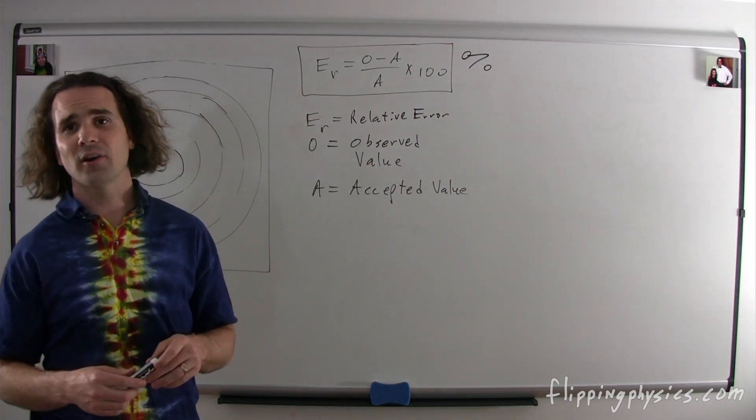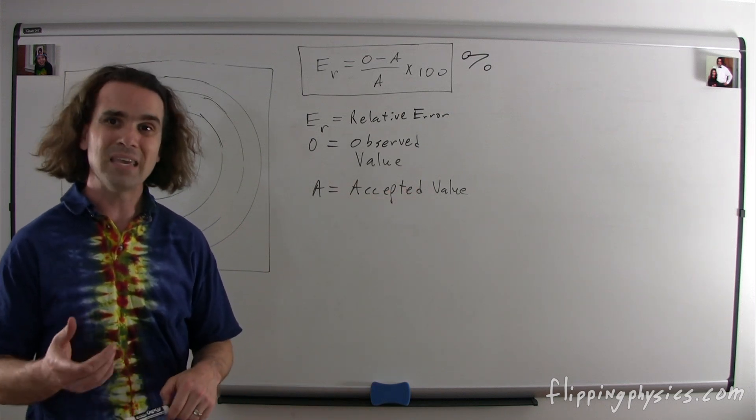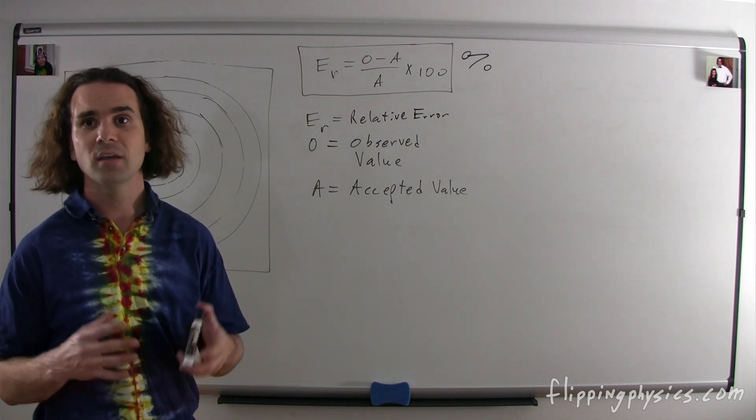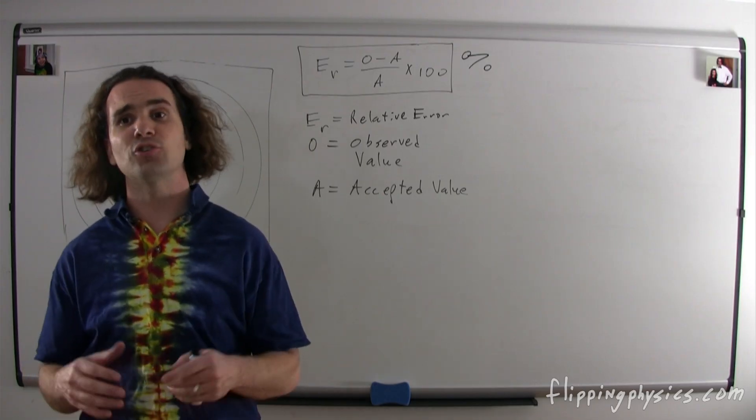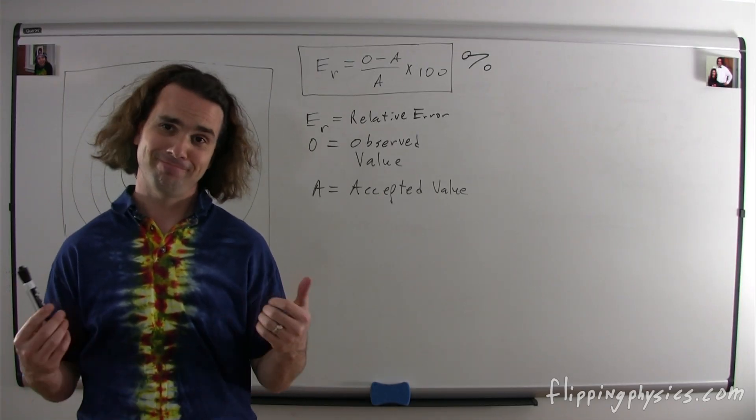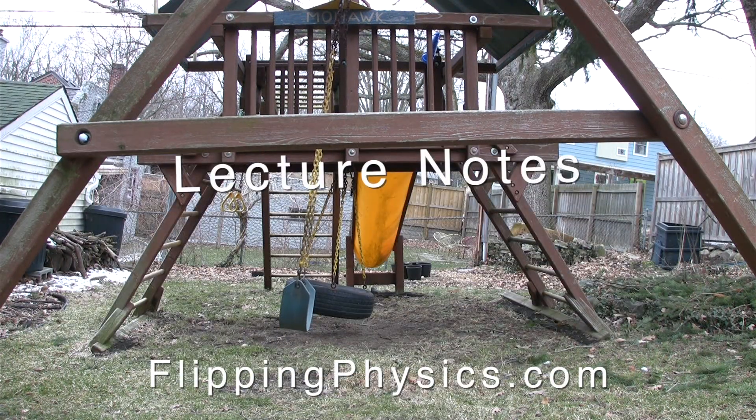Lastly, just so you know, there are equations for precision. However, I'm not going to cover them at this time. The basic idea is that you need to figure out the mean and the standard deviation, and if the values are within one standard deviation of the mean, the data would be considered to be precise. Well, that ends our discussion of accuracy and precision. I enjoyed learning with you, and I hope you enjoyed learning with me. Lecture notes are available at FlippingPhysics.com. Please enjoy lecture notes responsibly.